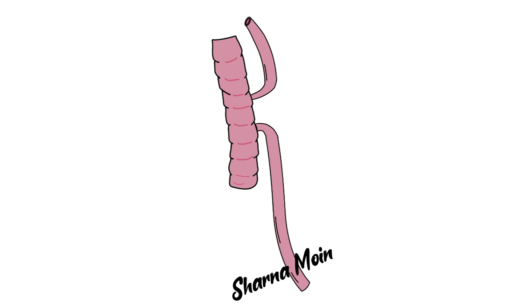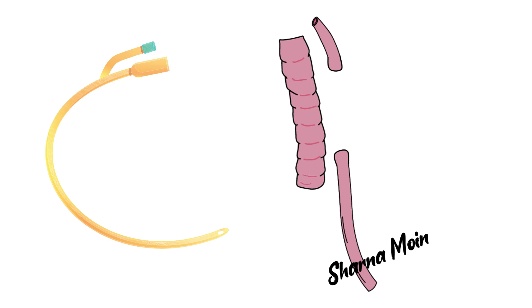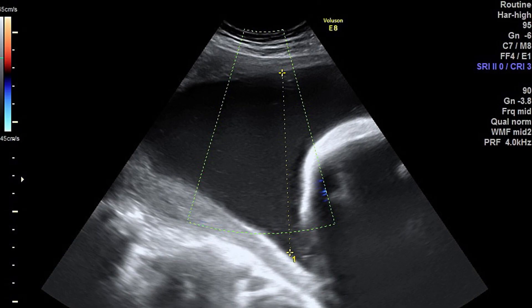If any of these signs or symptoms are noticed, a catheter is gently passed into the esophagus to check for resistance. If resistance is noted, other studies are done to confirm the diagnosis. On plain X-ray, a feeding tube will be seen not passing through the esophagus, and will remain coiled in the upper esophageal pouch.